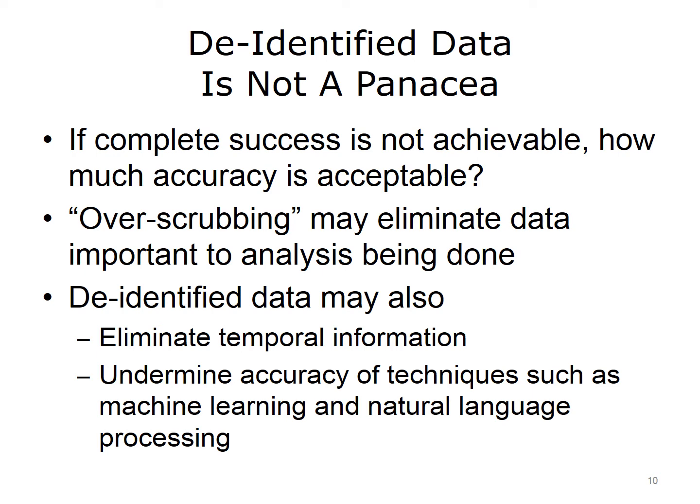By the same token, when we over-scrub the data — in other words, when we remove identifiers — we may end up eliminating data that's important to the analysis being done, whether it's research or quality measurement. When we de-identify data, we may eliminate things like temporal information. We may de-link the various healthcare episodes that a patient has had, and this information may be important in longitudinal analysis. In addition, we may undermine the accuracy of techniques such as machine learning and natural language processing that operate on this data, and when it's de-identified, we don't know how that affects the accuracy of these computational processes.